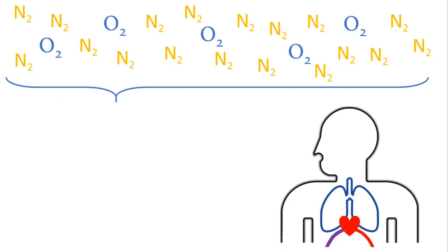So we start here. Oxygen is in the air, as well as nitrogen. The total pressure is equal to the sum of the pressures generated by each type of molecule. So if you have a container with just oxygen and nitrogen, the pressure inside will be equal to the pressure generated by oxygen molecules plus the pressure generated by nitrogen molecules.